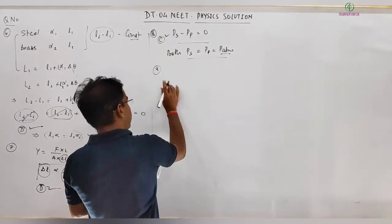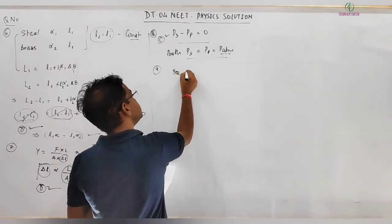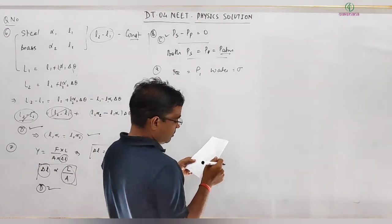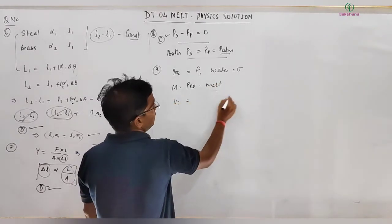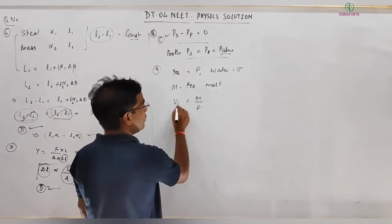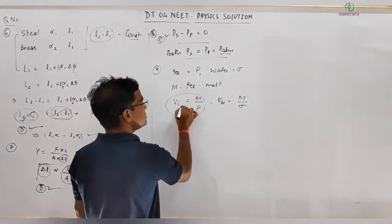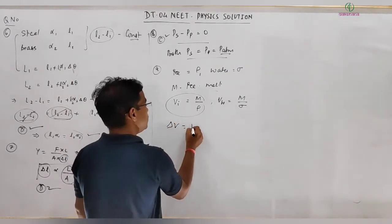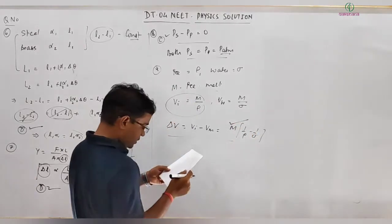Question 9: Ice has density ρ and water has density σ. When a mass m of ice melts, the volume of ice is m/ρ and the volume of water formed is m/σ. Since ice is less dense, volume decreases. The decrease in volume is ΔV = m/ρ − m/σ = m(1/ρ − 1/σ). This matches option C.